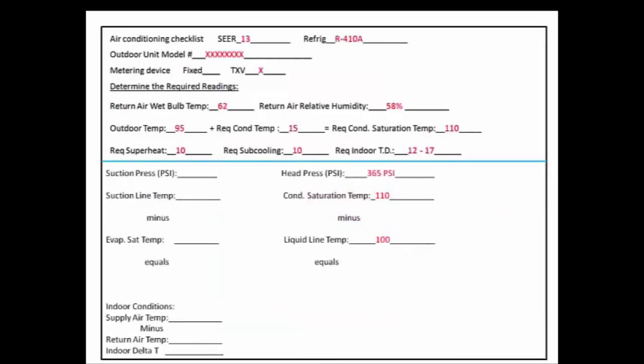So let's go back to our worksheet. Our head pressure is 365 psi. We convert that using a pressure temperature chart to a condenser saturation temperature of 110. From that we subtract 100, which was the actual line temperature of the refrigerant, and that equals 10 degrees of subcooling.